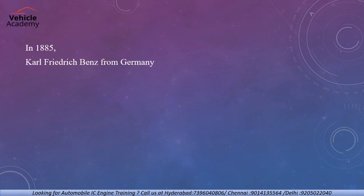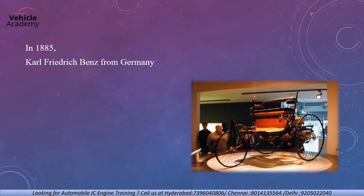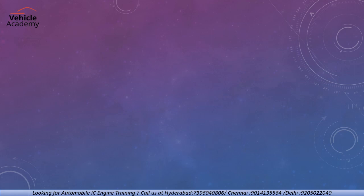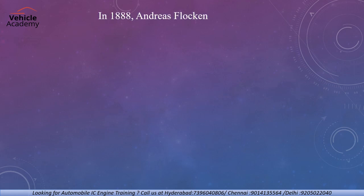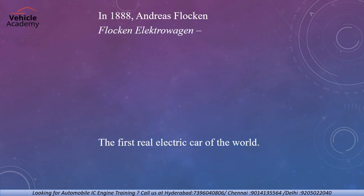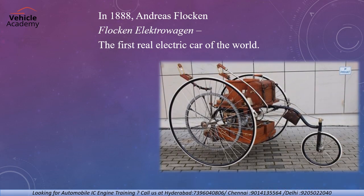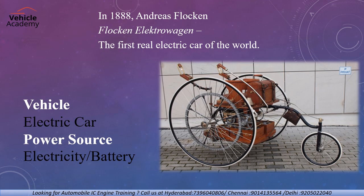After that, in 1885, Carl Friedrich Benz from Germany built the first gasoline automobile powered by an internal combustion engine, where the source of power is an IC engine. Then in 1888, German inventor Andreas Flocken presented the Flocken Electrowagen — the first real car of the world, or you can say the first electric car of the world, where the source of power is battery or electricity.